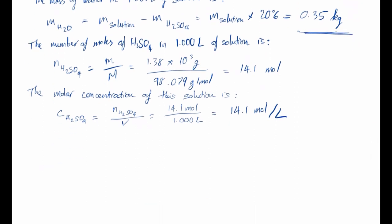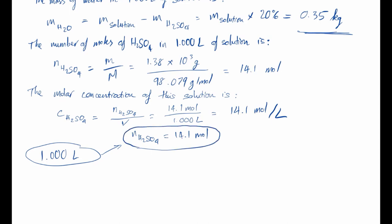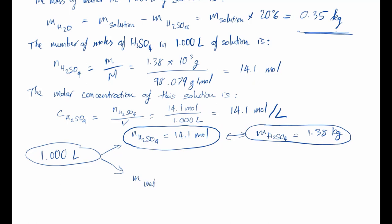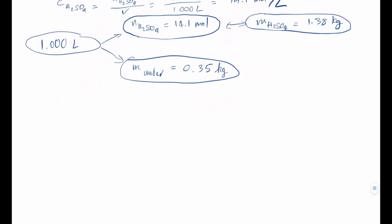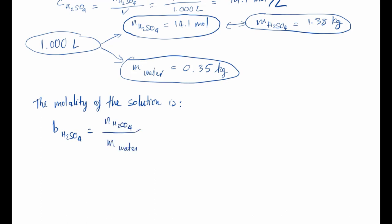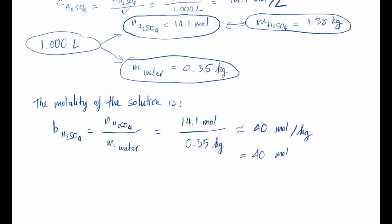Now we need to calculate the molality of the solution. Molality is the number of moles of sulfuric acid divided by the corresponding mass of the solvent, water. From above, in one liter of solution we have 14.1 moles of sulfuric acid, and 0.35 kg of water. So the molality B = moles of H₂SO₄ / mass of water ≈ 40 moles per kilogram, or 40 molal.